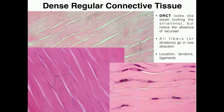Because there are no lacunae, that's how you recognize these as dense regular connective tissue. Dense regular connective tissue is commonly found in tendons and ligaments, which we're going to talk about briefly when we do muscle tissue after the first practical. You typically find this tissue where things need to be very, very strong.